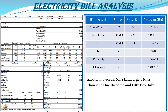The bill amount is the total electricity bill — the addition of demand charges, energy charges, fuel adjustment cost, tax and PF penalty. The total bill amount is 9,89,152 rupees, which is the summation of all these factors.